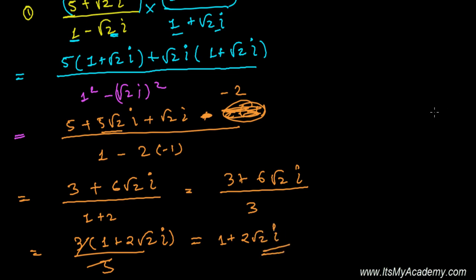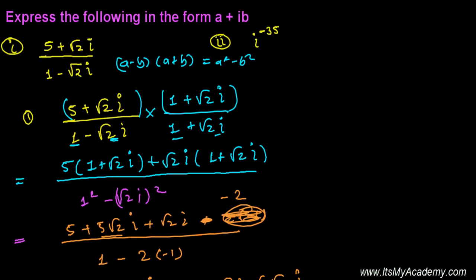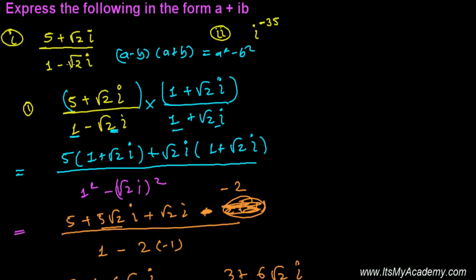This is exactly in the format the question was asking—it's in the format a + bi. I hope you understand how we converted it into a + bi format, the standard format of complex numbers. When you get a denominator with roots, try to rationalize it. The next one is i^(-35).